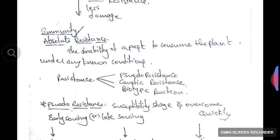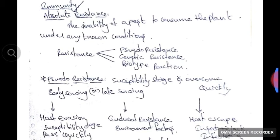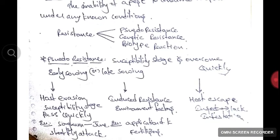In pseudo-resistance, the susceptibility stage is overcome very quickly, and it is obtained by early sowing or late sowing. Pseudo-resistance includes three parts, shortly termed as HIH: host evasion, induced resistance, and host escape.